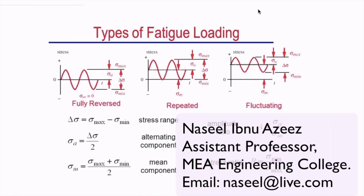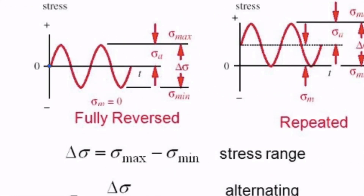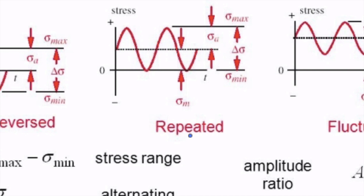As we discussed, a material experiencing a sinusoidal curve — this kind of fatigue and dynamic loading can be classified into three different types of loading. The first one we already discussed as an exercise example: this kind of stress is what we call a fully reversed cycle. It starts from zero, reaches a maximum value, goes back to zero, then changes direction, experiencing negative stresses — that is, compression. This tension-compression cycle is called the fully reversed cycle.